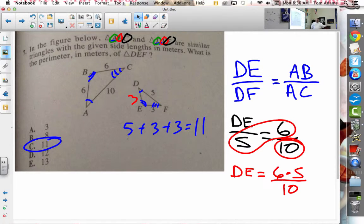So, it's in the figure below, triangle ABC and DEF are similar triangles with the given side lengths in meters. What is the perimeter in meters of DEF? 3 is not the perimeter.